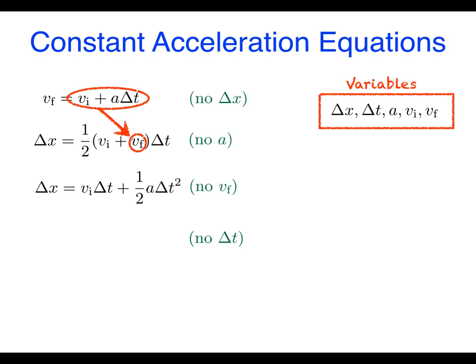Let's suppose instead that you were looking for an equation that didn't involve Δt. Well now you can do a little algebra to isolate Δt in the first equation. Plug it in for Δt in the second equation and the result is this: v_f squared equals v_i squared plus 2a times Δx.